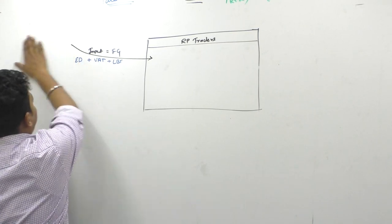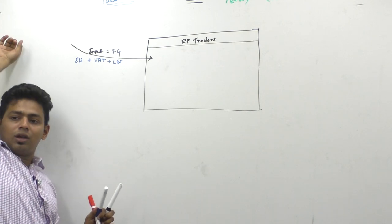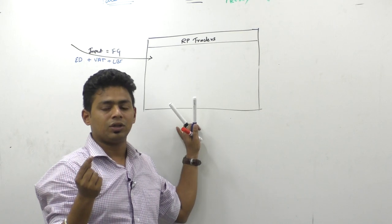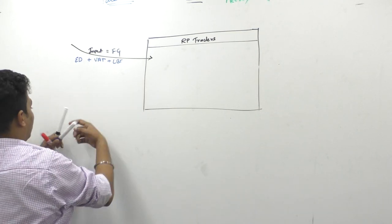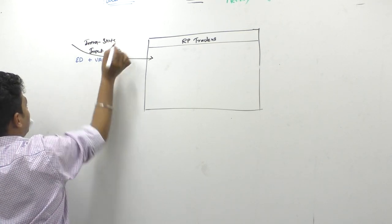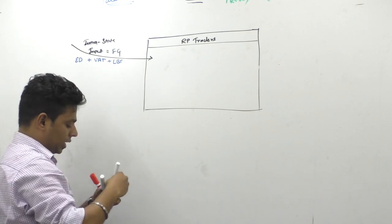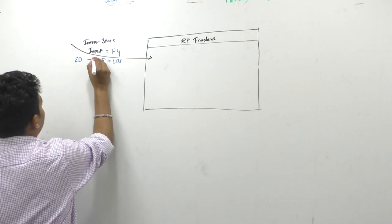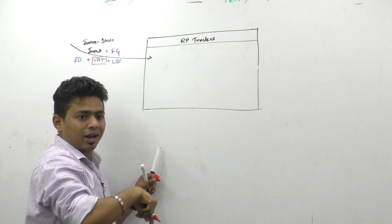That manufacturer will pay this VAT to which government? You both are in same state, better I write intrastate input. What is intrastate input? Intrastate. You are purchasing from same state. That means whatever VAT you paid here, this VAT you paid to which government? State government. Maharashtra.